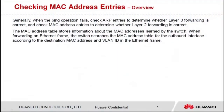Hi everyone. I'd like to show you how to query MAC address entries and ARP entries. Generally, when the ping operation fails, check ARP entries to determine whether layer 3 forwarding is correct, and check MAC address entries to determine whether layer 2 forwarding is correct.